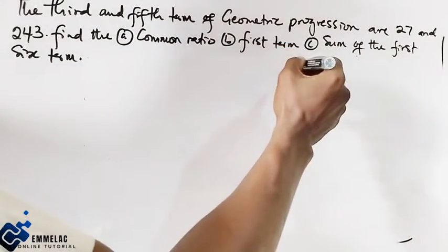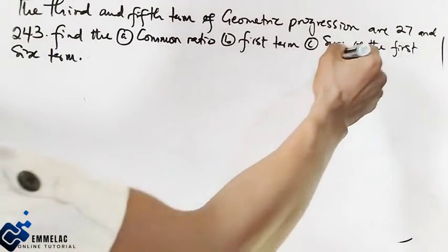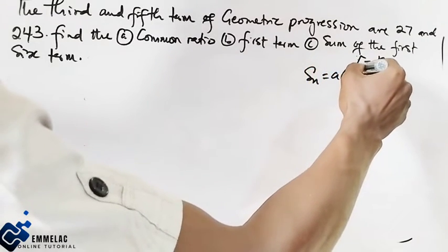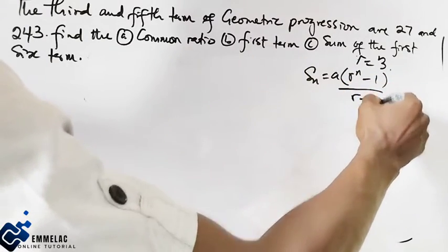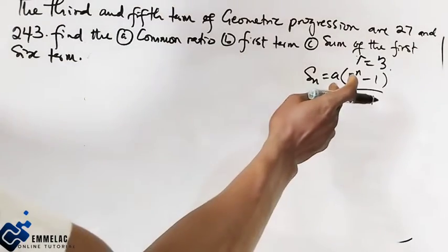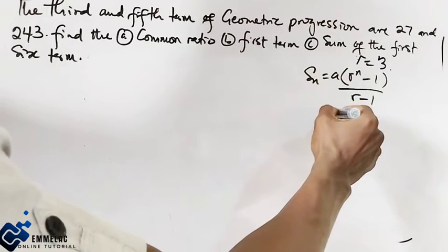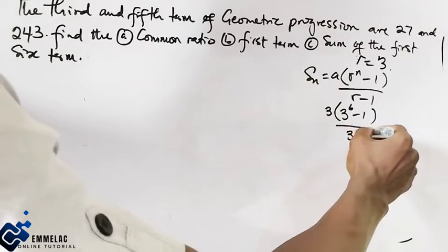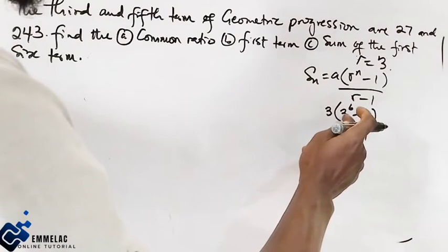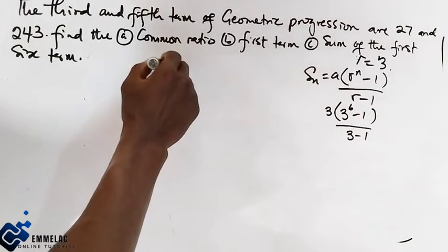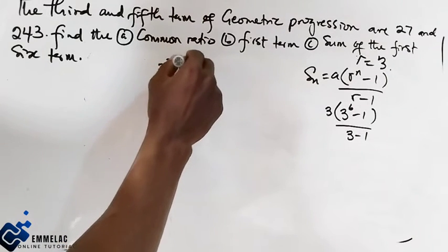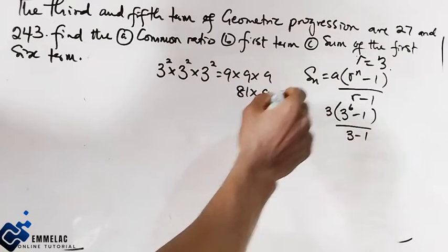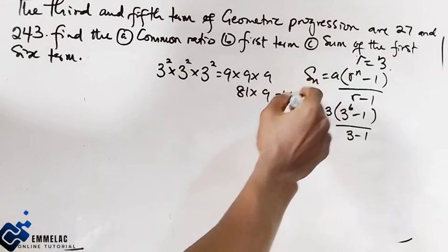Solving for R equals 3 — since 3 is greater than 1, we use S_n equals A times (R^n minus 1) over (R minus 1). Here A equals 3 and R equals 3. Now 3 raised to the power 6: that is 3² times 3² times 3² times 3², which equals 9 times 9 times 9, giving us 729.